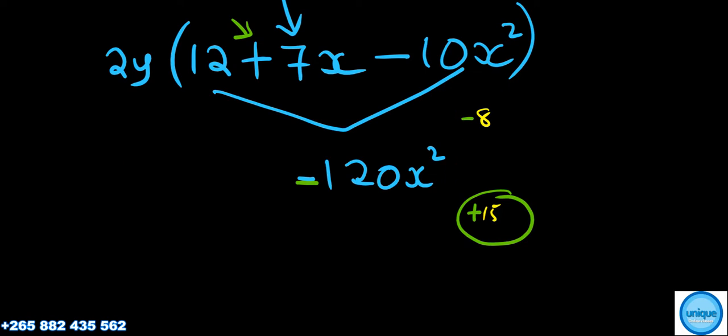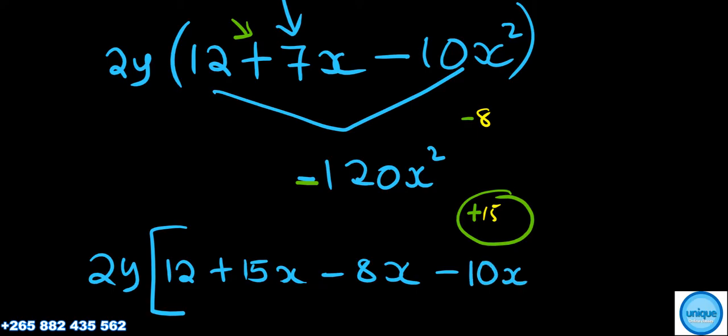Now instead of writing negative 7x, we're going to replace it with the factors. So it will be 2y in a bigger bracket. You have 12 plus 15x minus 8x minus 10x squared.